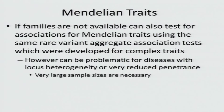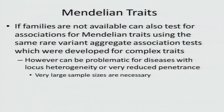In many cases we have single individuals—maybe with a family history of disease—but no other family members available for study. We can study Mendelian traits and perform association analysis using these individual cases, looking for association using rare variant aggregate association tests developed for complex traits. However, this can be very problematic for diseases with locus heterogeneity. Many individuals may not have variants in the same gene, and you would need a very large sample size—which is very difficult to obtain for rare Mendelian diseases. It's going to work in some cases, but not always.